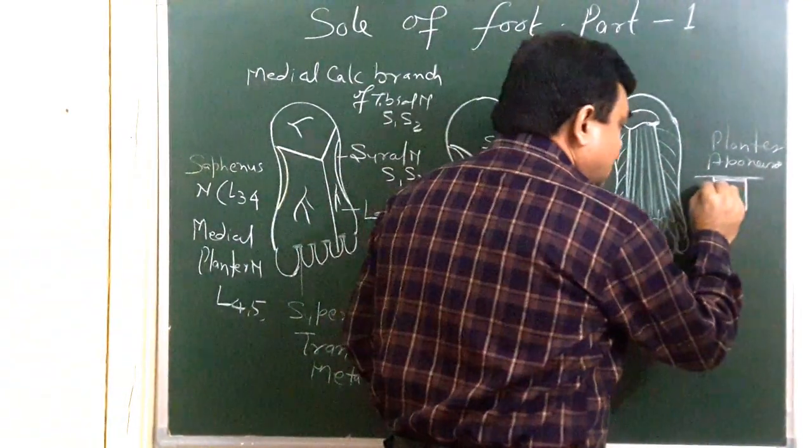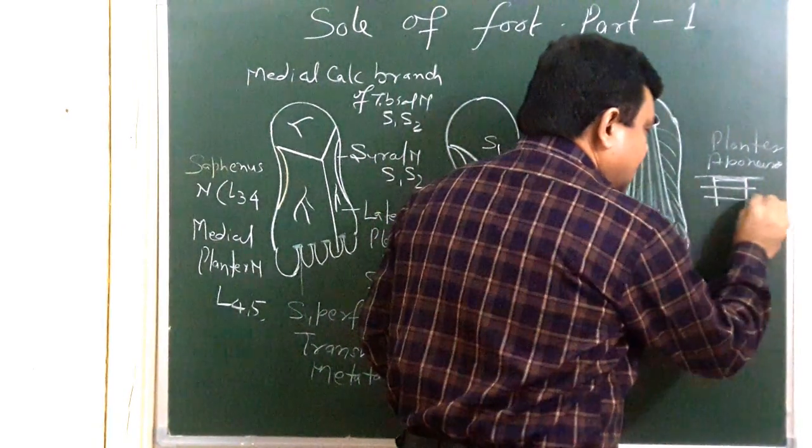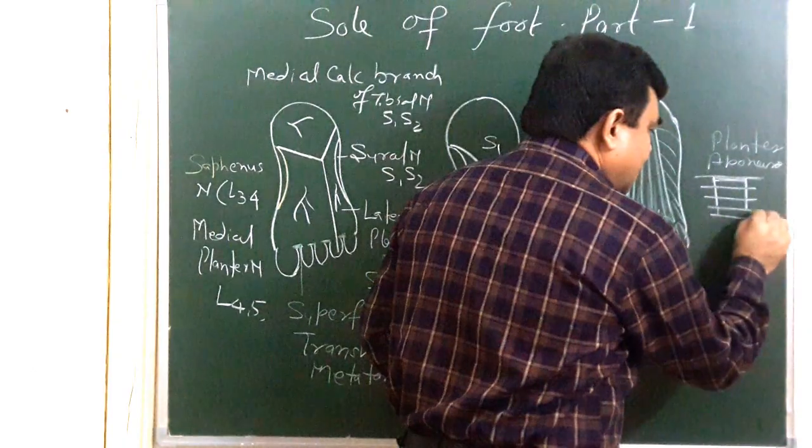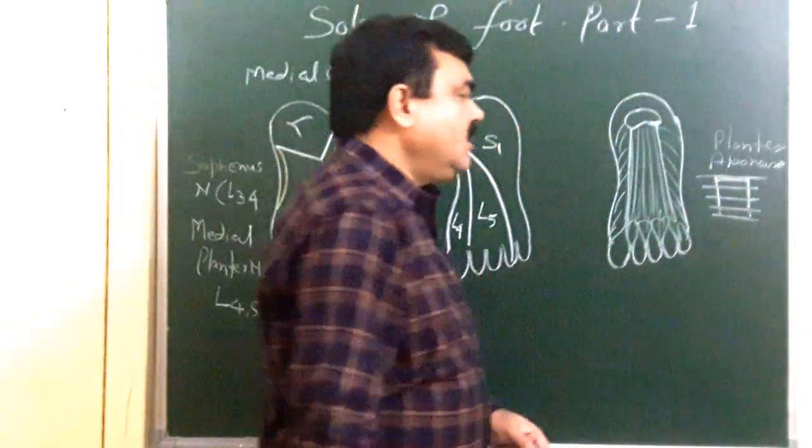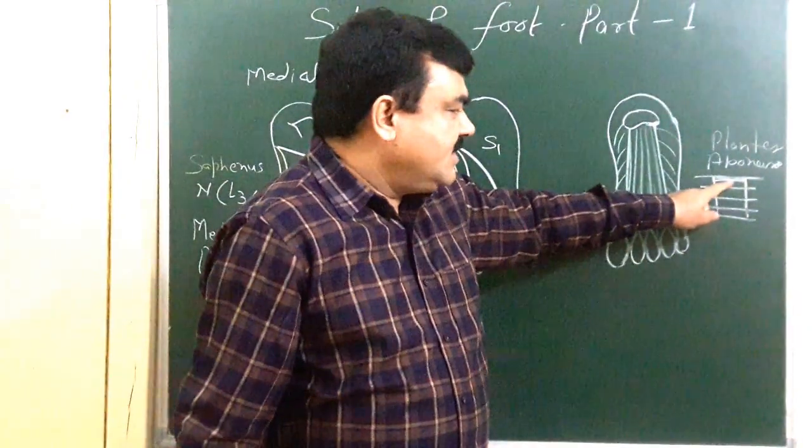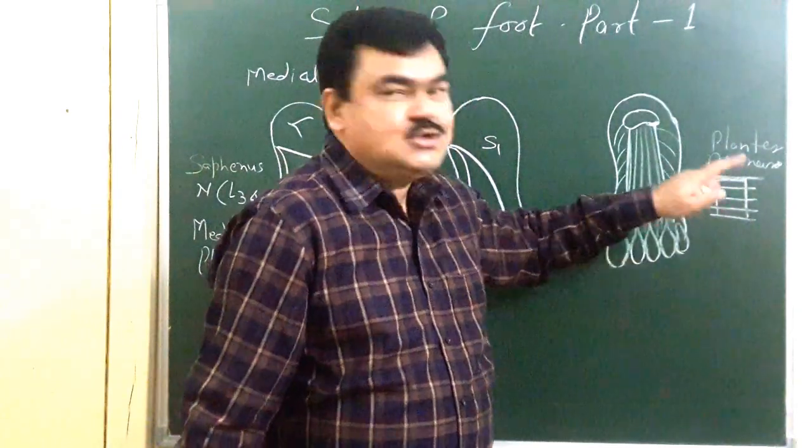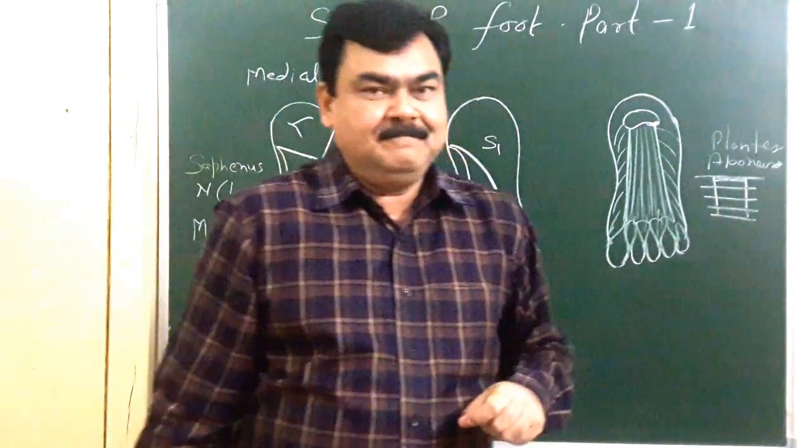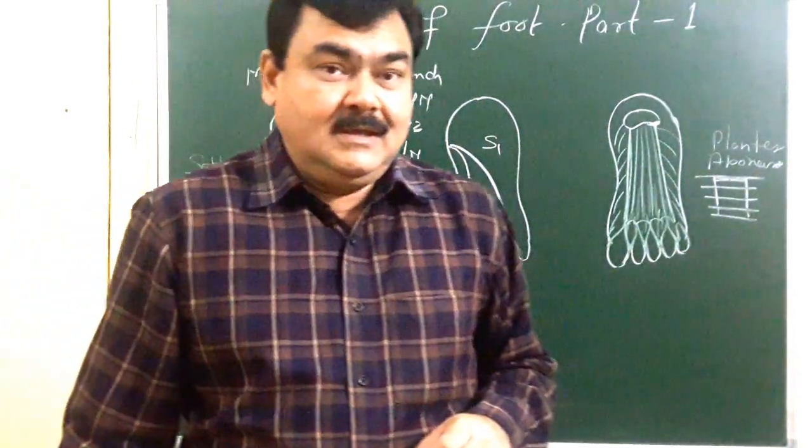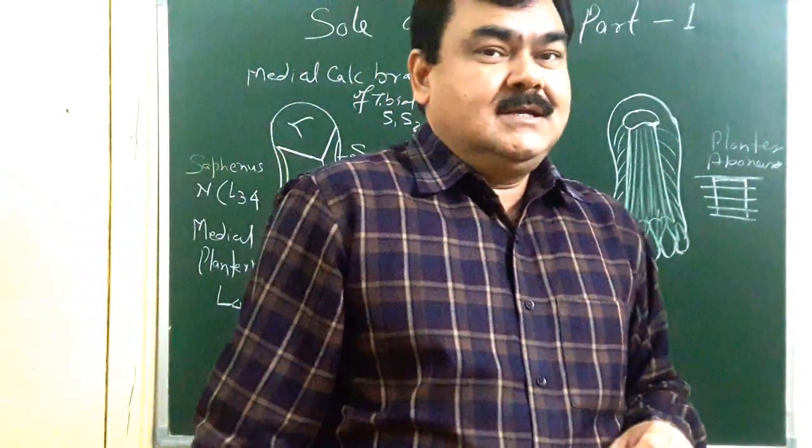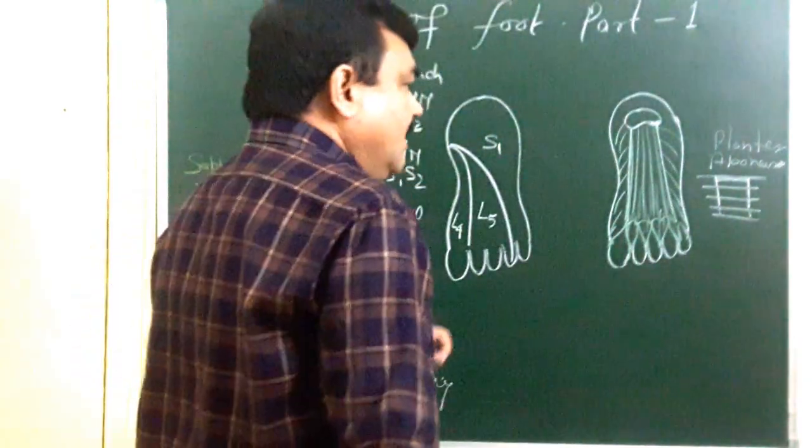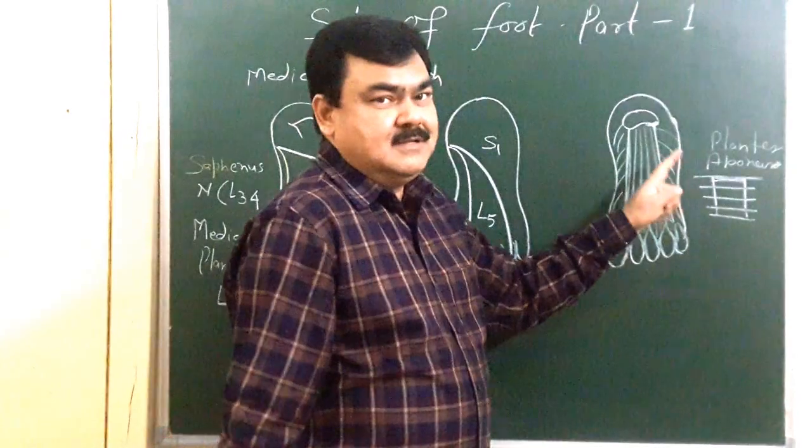And there are another septa transversely arranged. And these divide the sole into four layers. So these are four layers of the sole. This is first layer, second, third, fourth layer. Each layer has different types of muscles. So we will discuss in second part.